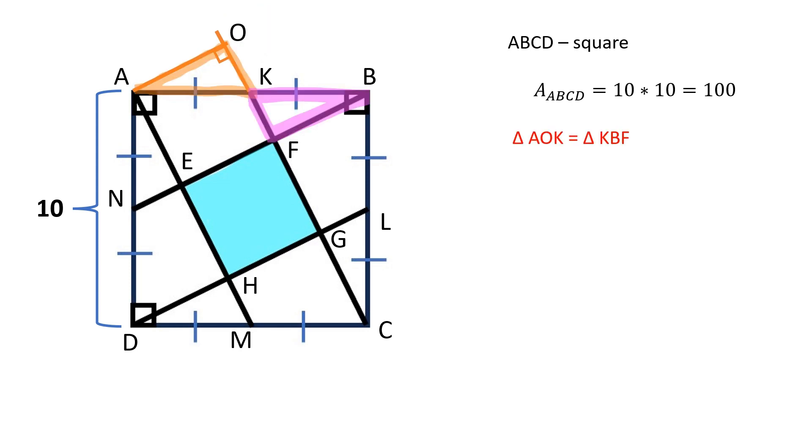Triangles AOK and KBF are congruent by the hypotenuse and an acute angle. AO is equal to KB.